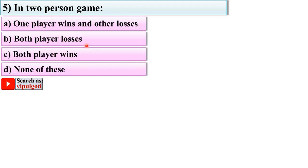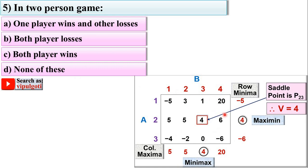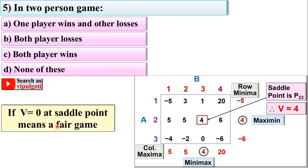Next question: in a two person game — options: one player wins and the other loses, both players lose, both players win, or none of these. Looking at this image, the value of the game is 4, meaning player A wins 4 units whereas player B loses 4 units. For a two person game, generally one player wins and the other loses. However, if the value of the game is 0, neither A nor B wins or loses — that is called a fair game.